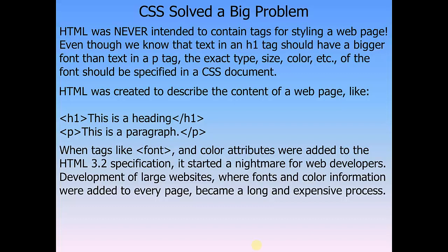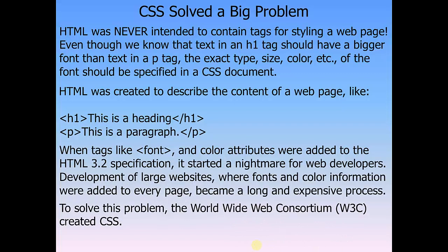When tags like font and color attributes were added to the HTML 3.2 specification, it started a nightmare for web developers. Development of large websites where fonts and color information were added to every page became a long and expensive process. For example, if you want to change the color of something like a contact section on every single page, you'd have to go to every page and change it. To solve this problem, the World Wide Web Consortium W3C created CSS. CSS removed styling from the HTML page.